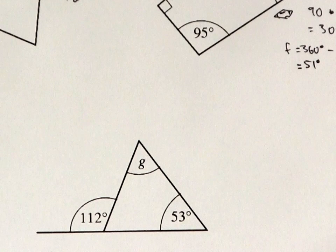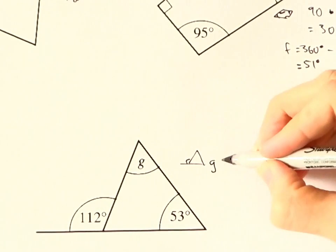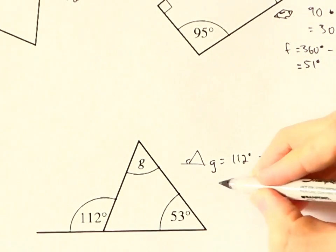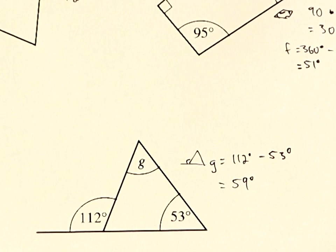Hmm, now G is one of the interior angles opposite the marked exterior angle. So G and 53 have to add up to 112. That means G has to be 112 minus 53, which is 59 degrees.